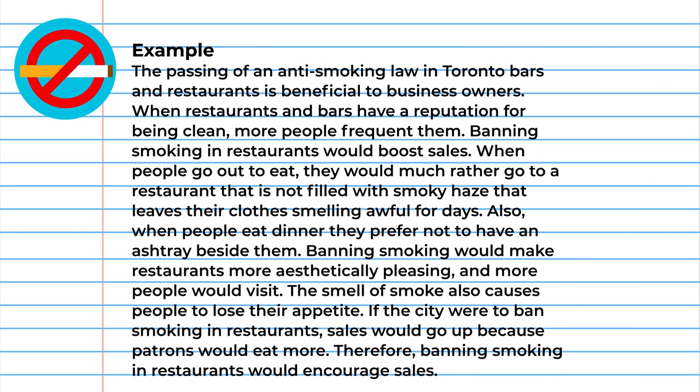The topic sentence in the following example paragraph would be: the passing of an anti-smoking law in Toronto bars and restaurants is beneficial to business owners.